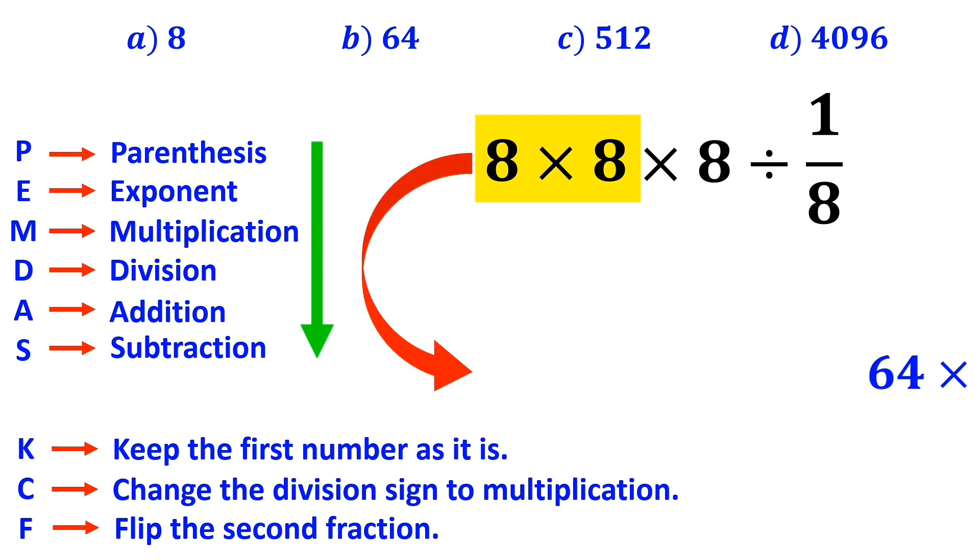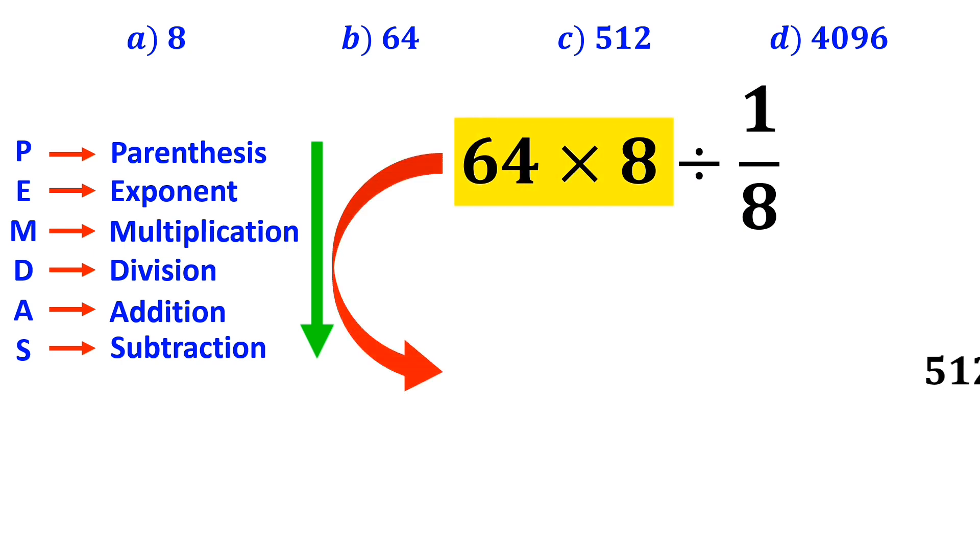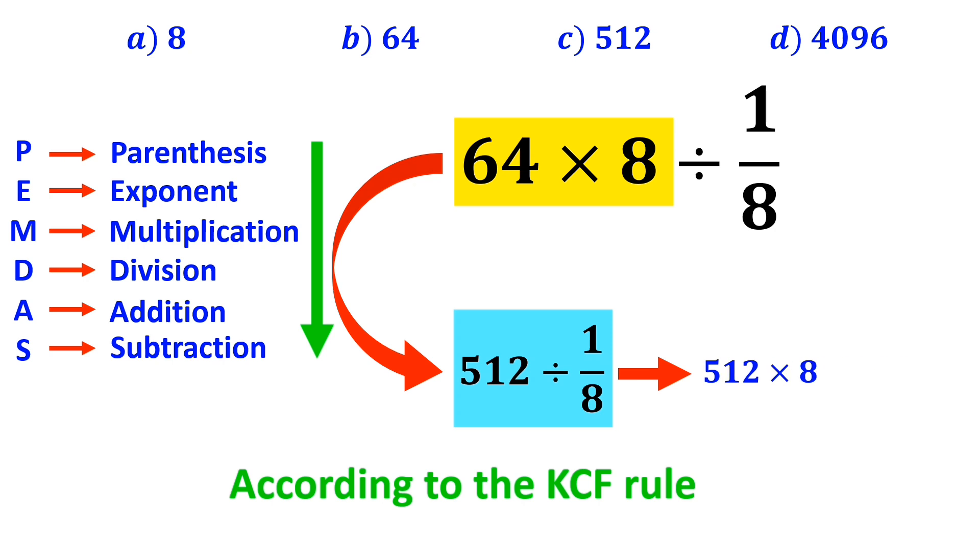Now we can rewrite this expression as 64 times 8 divided by 1 over 8. In the next step, we multiply 64 by 8, which simplifies it to 512 divided by 1 over 8. And for the part which I have highlighted in blue, according to the KCF rule, we rewrite it as 512 times 8, which results in the final answer 4096.